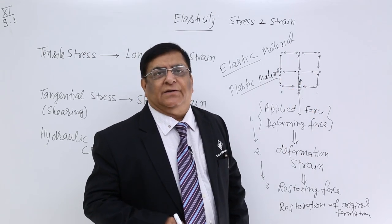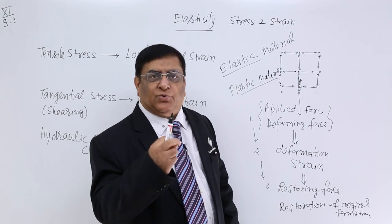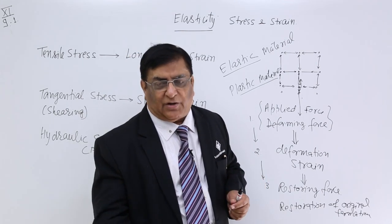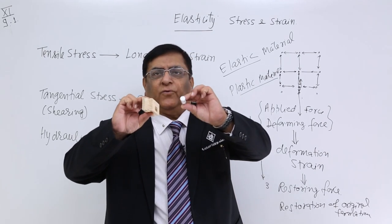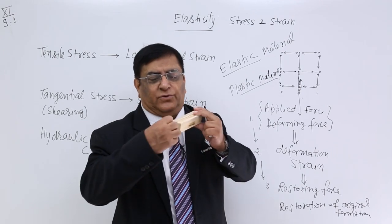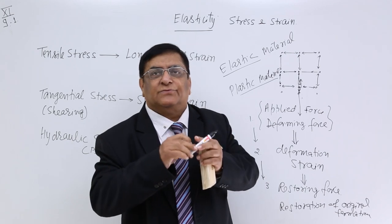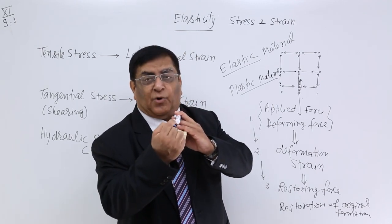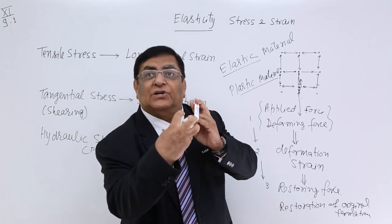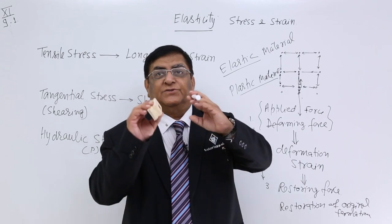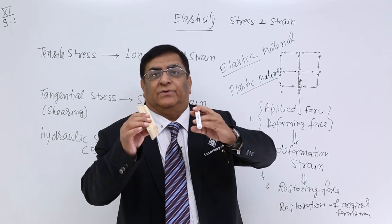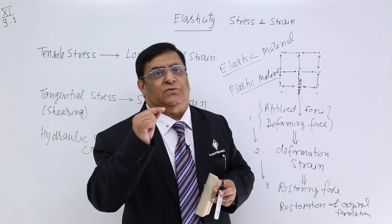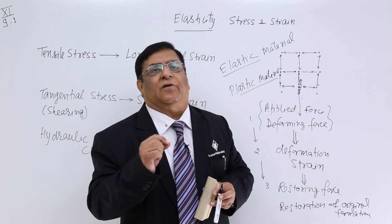To measure stress, we have a method: we measure restoring force per unit area, and then we call it stress. Restoring force per unit area — because this force may be large for a large area and small for a small area. For example, one material develops 10 N restoring force over a large area, another develops 5 N over a very small area — the second may be more elastic. So for comparison, we calculate per unit area. That gives us the quantity we call stress.